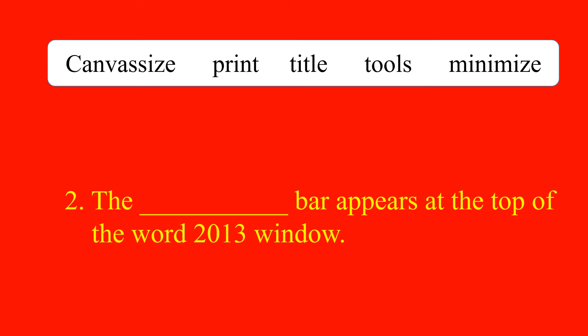Question number 2. The blank bar appears at the top of the Word 2013 window. Answer: The title bar appears at the top of the Word 2013 window.